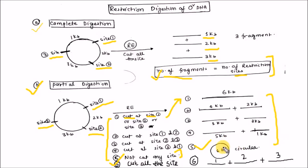The fragments generated in partial digestion of this circular DNA are: 6 KB, 5 KB, 3 KB, 2 KB, 4 KB, and 1 KB.